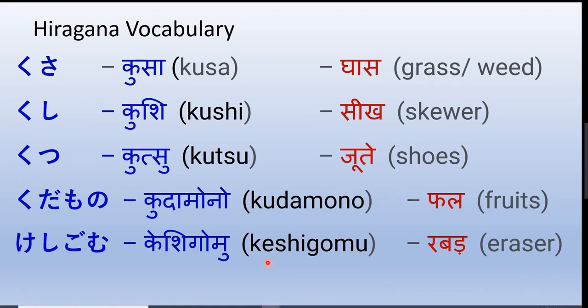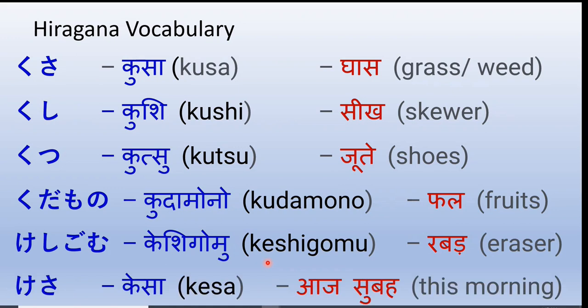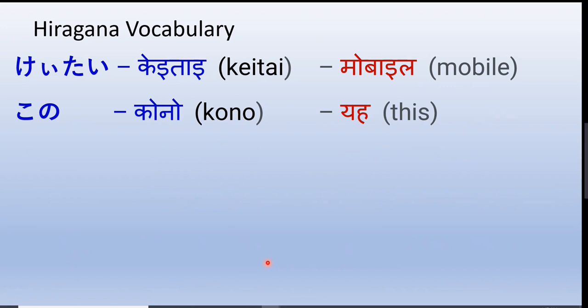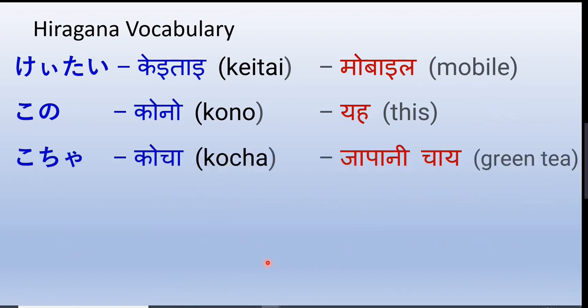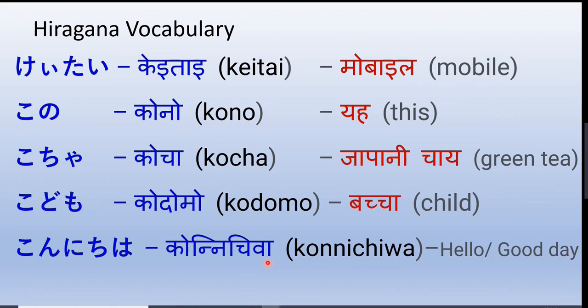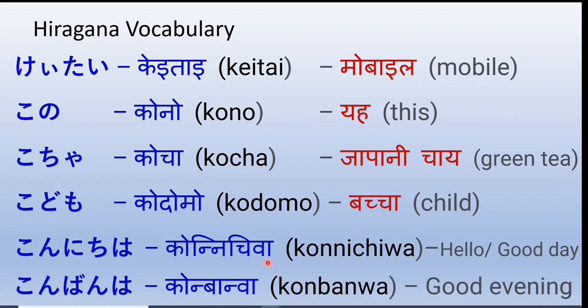Keshigomu — eraser. Kesa — this morning. Keitai — the mobile phone. Kono — this. Kocha — the special Japanese green tea, whose origin is Japan and which is now available all over the world. Kodomo — child. Konnichiwa — the generic hello or good day. Konbanwa — good evening.